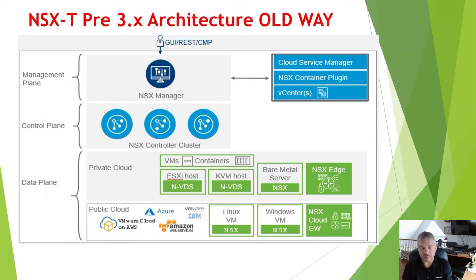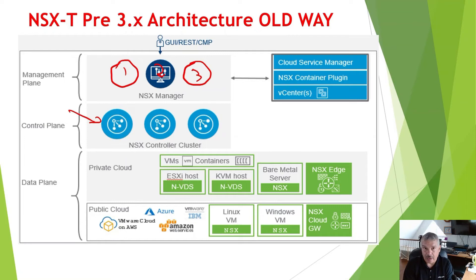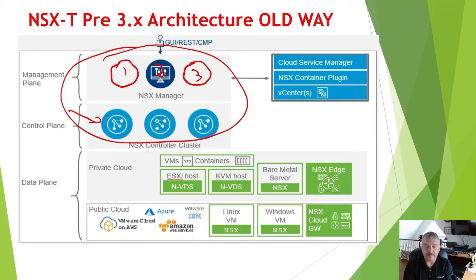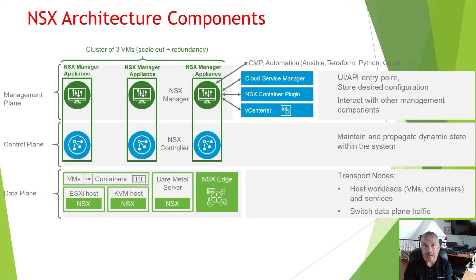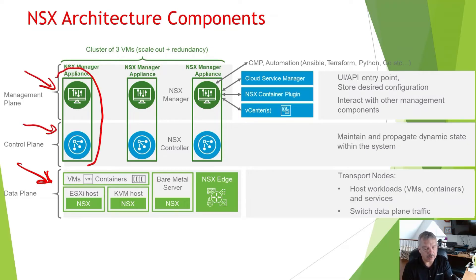VMware could have deployed three NSX Managers for redundancy, just like they did for the control plane. Problem is, now you've got all those wasted resources. So the network and security business unit at VMware decided to take a different approach, and this is what came out in version 3.0 — the big change. We still have the data plane, but now there's this thing called the unified appliance. Management plane and control plane all run on a single VM.